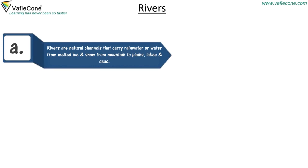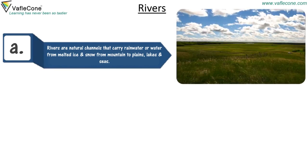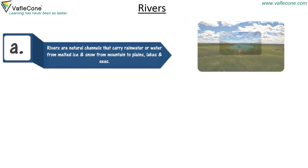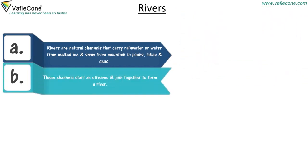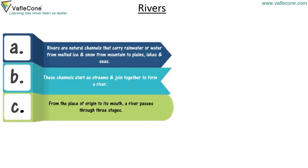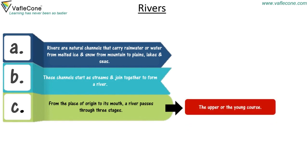Rivers. Rivers are natural channels that carry rainwater or water from melted ice and snow from mountains to plains. These channels start as streams and join together to form a river. From the place of origin to its mouth, a river passes through three stages: the upper or young course, the middle or mature course, and the lower or old course.